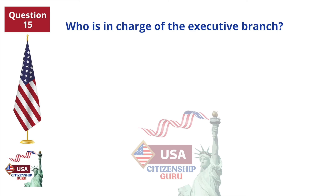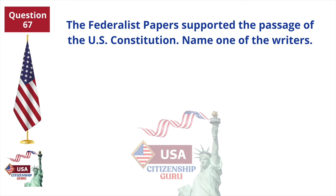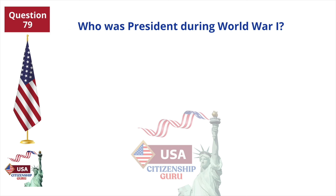Who is in charge of the Executive Branch? The president. The Federalist Papers supported the passage of the U.S. Constitution — name one of the writers. James Madison. Who was president during World War I? Woodrow Wilson.